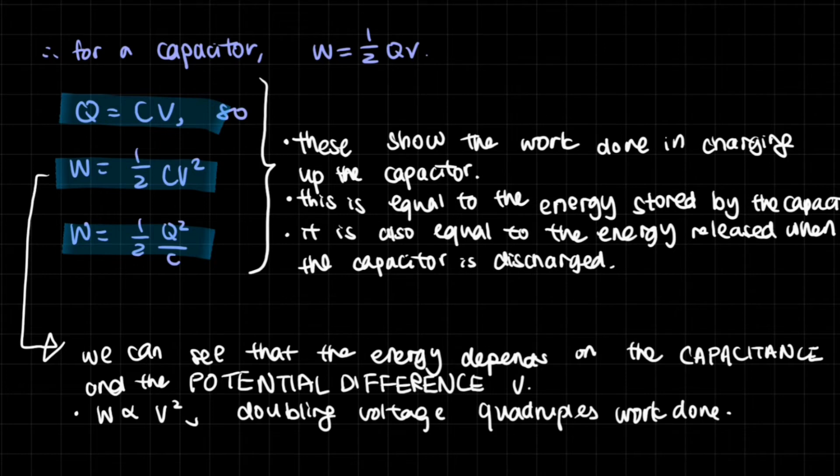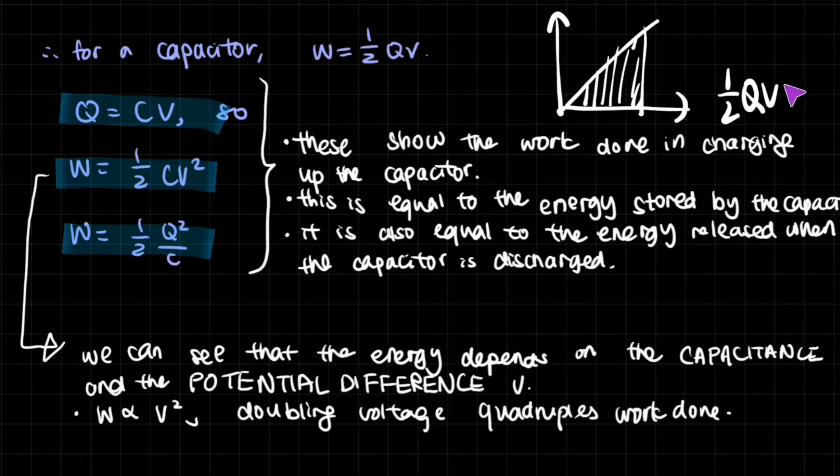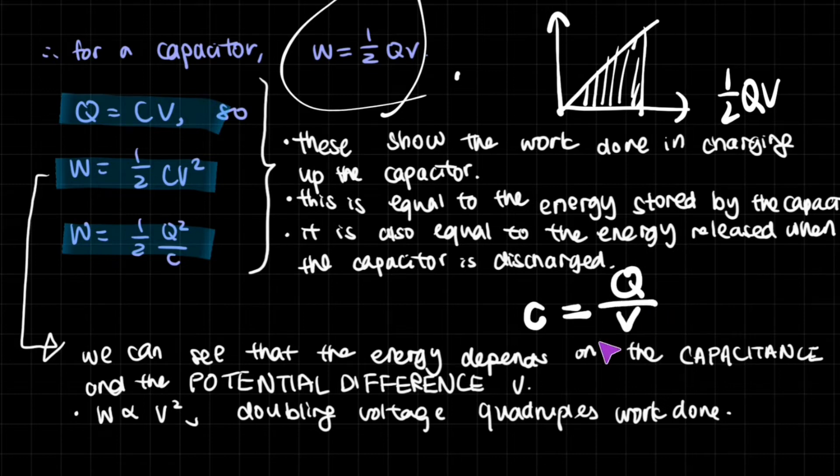So for a capacitor, we have this equation. And usually for capacitors, it would be this sort of graph where it is directly proportional. And therefore, the area under it would be the triangle. And as we said, the triangle would be one out of two QV. And that is what's right here. So Q, which is the charge, is equal to capacitance times voltage. Because as we looked at in the previous video, the capacitance is basically the charge per voltage. And so that's where we get that from. Now we can substitute the Q into this equation and then we can get work done is half CV squared or work done is half Q squared out of C. So this is basically very easy. You don't really need to memorize it and you can just derive it in the exam.